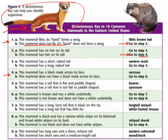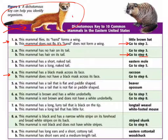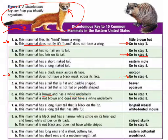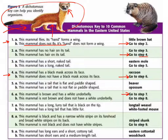Step 4A says: 'This mammal has a black mask across its face.' Step 4B says: 'This mammal does not have a black mask across its face.' Looking at this mammal's face, it does not have a black mask, so 4B directs us to go to step six — skipping step five. Step 6A says the mammal is brown and has a white underbelly. Looking at the mammal, it is brown and does appear to have a white underbelly, so 6A is the better answer, directing us to step seven.